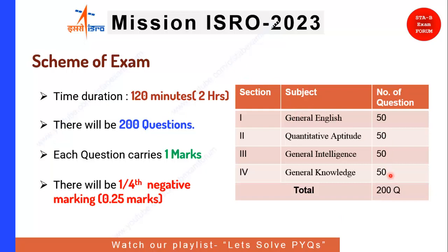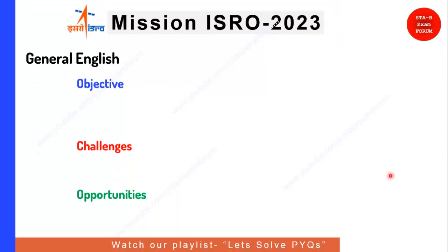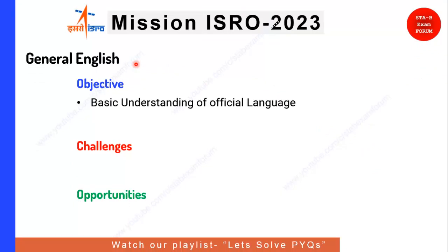Those who are appearing for both these exams can prepare once for all. Let's see each section one by one. The very first section is General English, with 50 questions. Before proceeding to the syllabus, let's see what is the objective of this section.